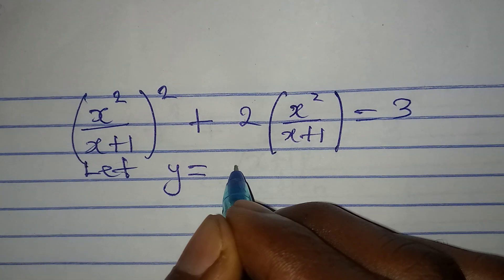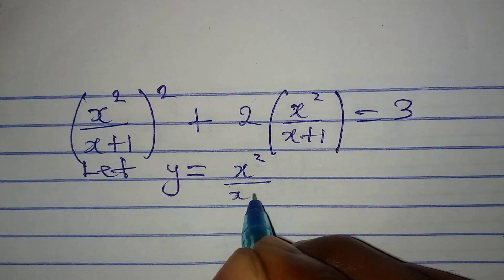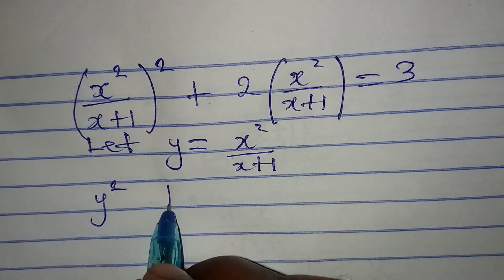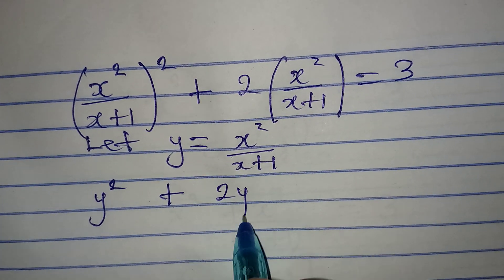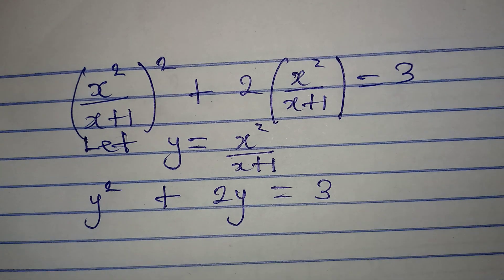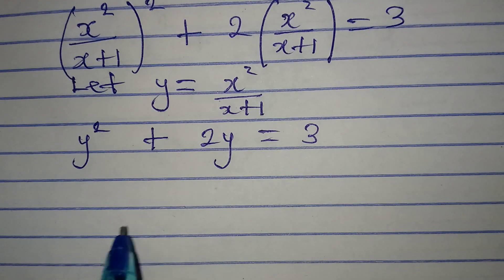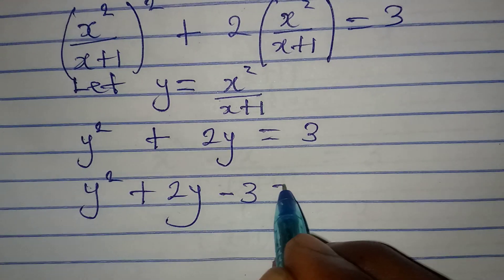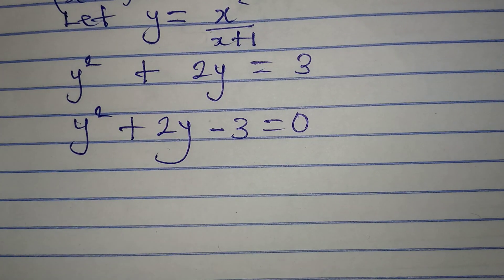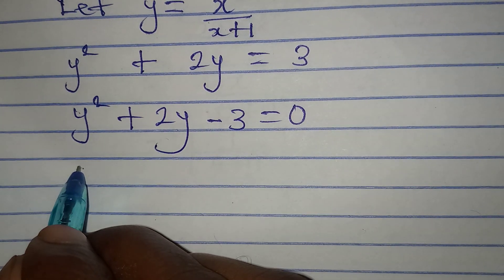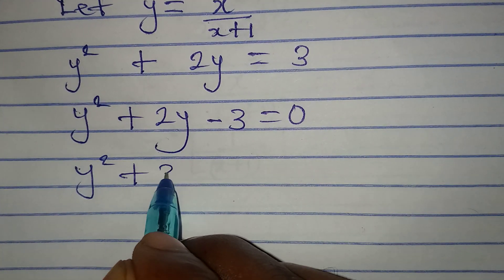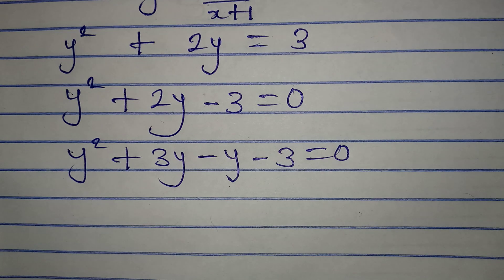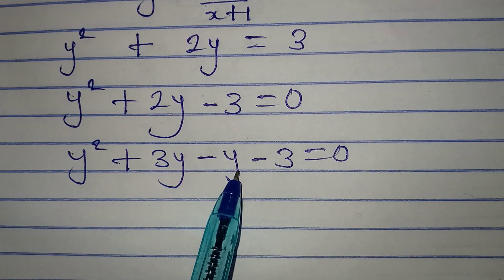Now look at this critically — we have the same expression in both terms in the bracket. So we're going to use a different letter to stand for it. Let y equal x squared over x plus one. That means in place of this I'm going to have y squared plus two y equal to three. Bringing everything to the left: y squared plus two y minus three equals zero.